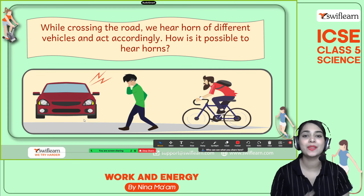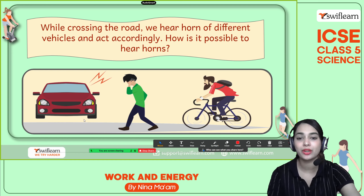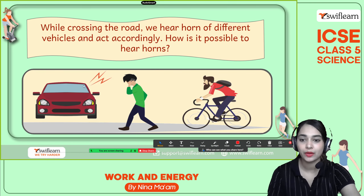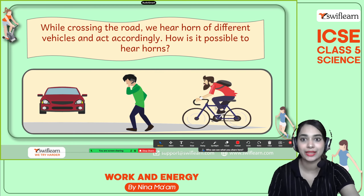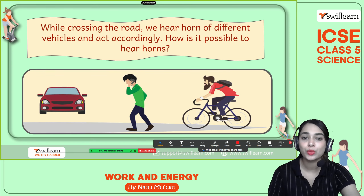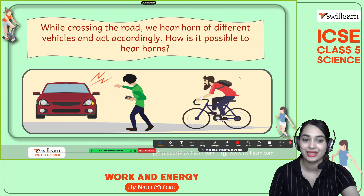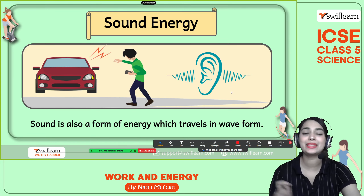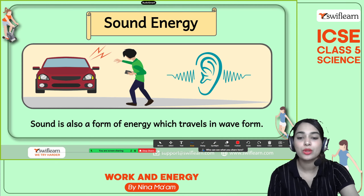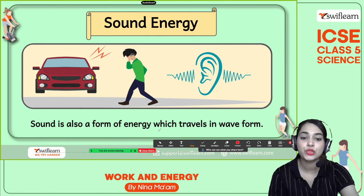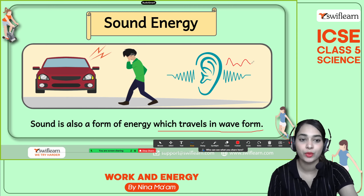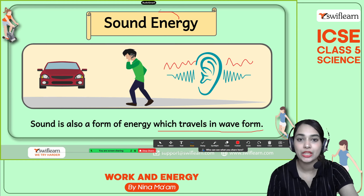This is another form of energy. You can see from this picture: a person is walking, a car is coming, and someone is cycling. While crossing the road, we hear horns from different vehicles and act accordingly. How is it possible to hear horns? It's because of sound energy. Sound is also a form of energy which travels in a wave form — and the energy associated with sound that travels in wave form is sound energy.